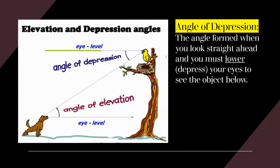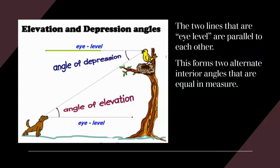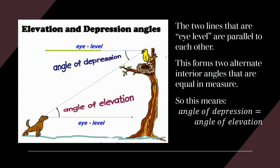There's something unique about the angle of depression and angle of elevation. If the bird looks straight out and the dog looks straight across, those two lines are parallel to each other. If you connect those two lines with a transversal — the line of sight from dog to bird — it creates two angles that are alternate interior angles, which are equal in measure. So the angle of depression is the same as the angle of elevation.